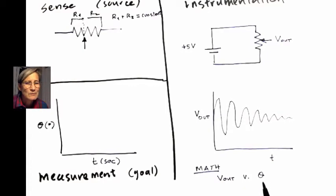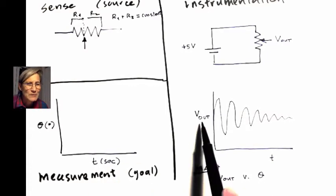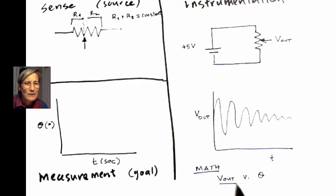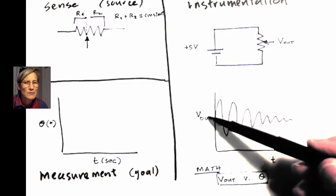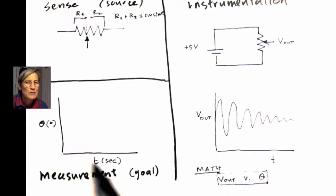And so once we have a relationship between V out and theta, we can substitute for V out. We can then get our measured quantity theta versus time.